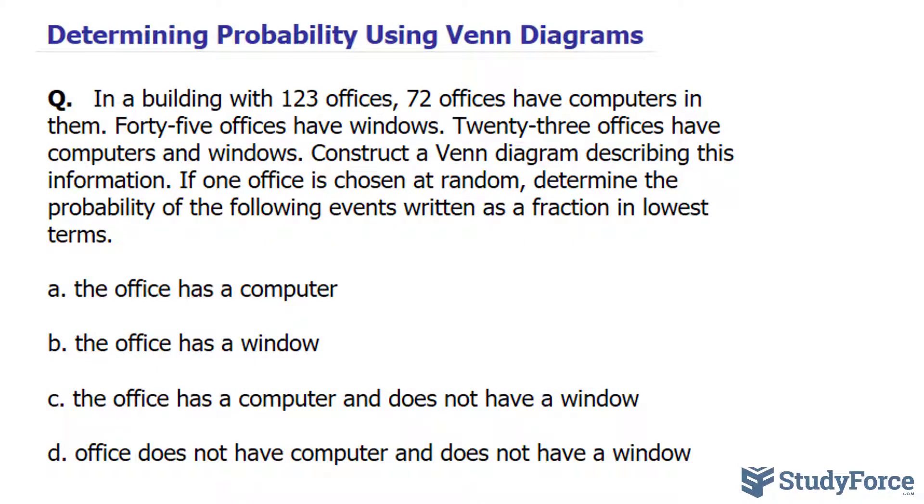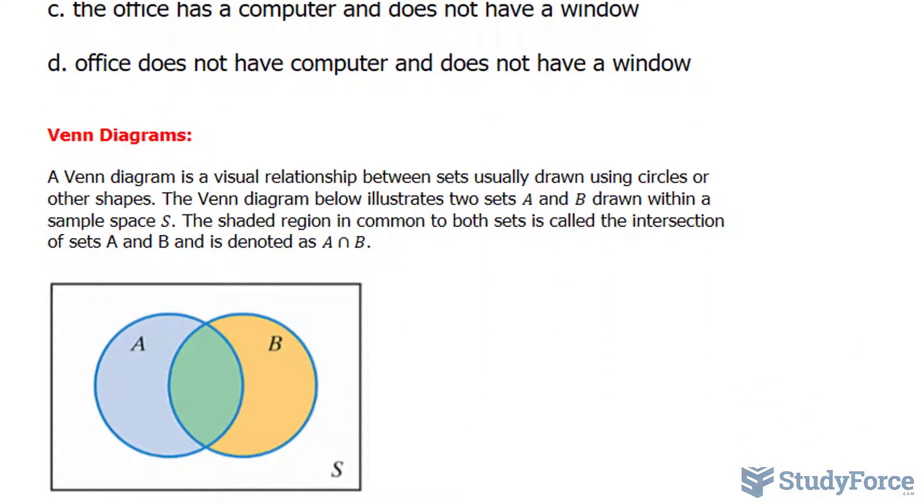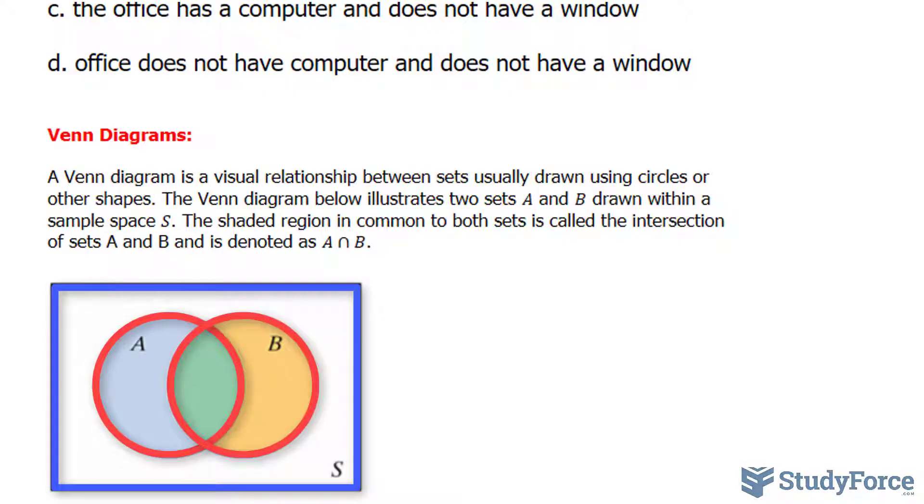The first question is: the office has a computer. As you may already know, a Venn diagram is a visual relationship between sets, usually drawn using circles or other shapes. The Venn diagram below illustrates two sets A and B drawn within a sample space S. The shaded region in common to both sets is called the intersection of A and B.